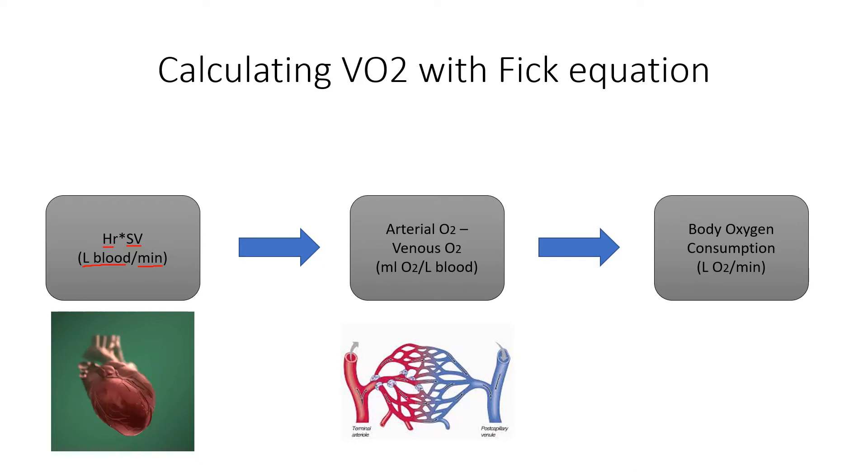Then we have this arterial O2 minus venous O2, given in milliliters of oxygen per liter of blood. This is calculating the concentration of oxygen in the arterial blood, subtracting the concentration of oxygen in the venous leftover blood.